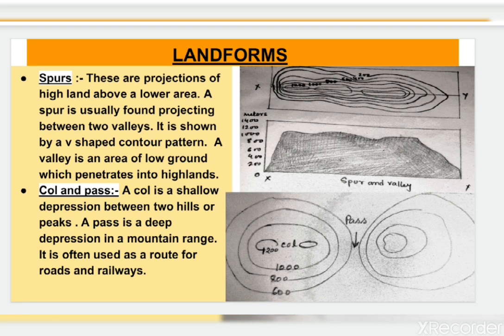First is spur. Spurs are projections of highland above a lower area, commonly found projecting between two valleys. They are shown by a V-shaped contour pattern. A valley is an area of low ground that penetrates into highland. A col is a shallow depression between two hills or peaks, while a pass is a deep depression in a mountain range, often used as a route for roads and railways.